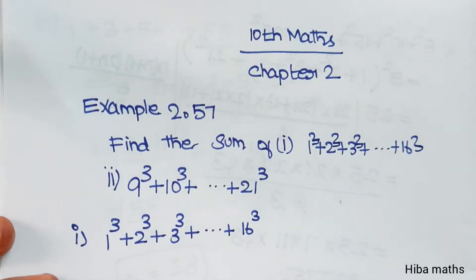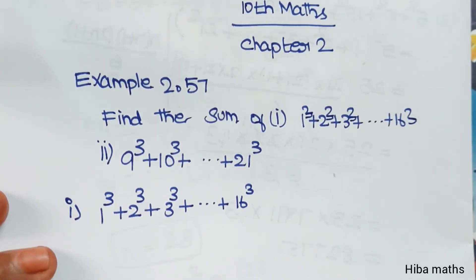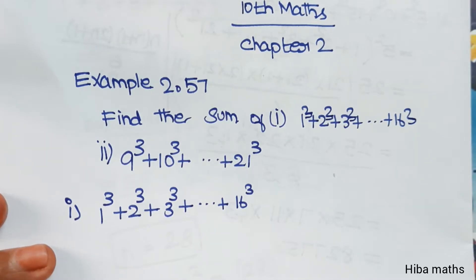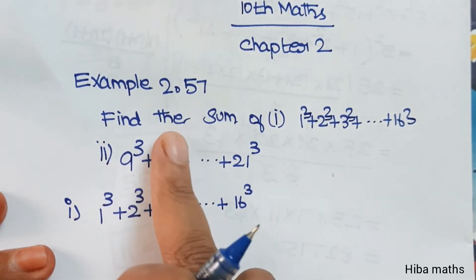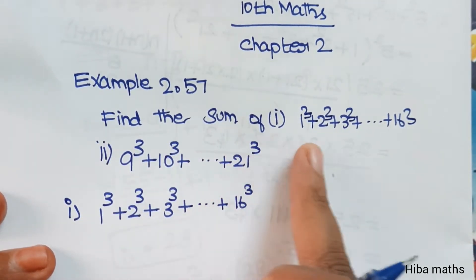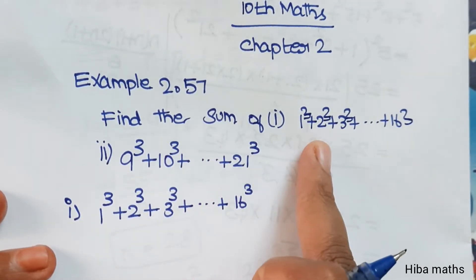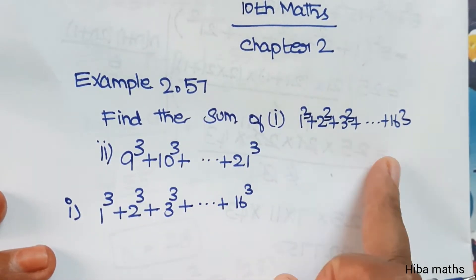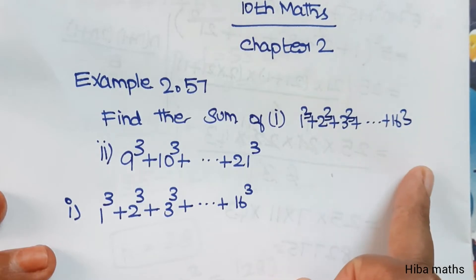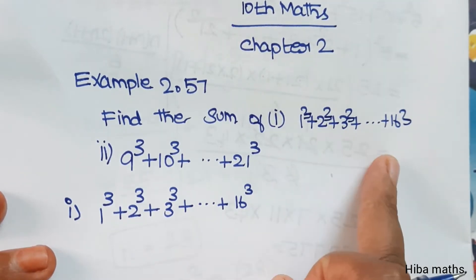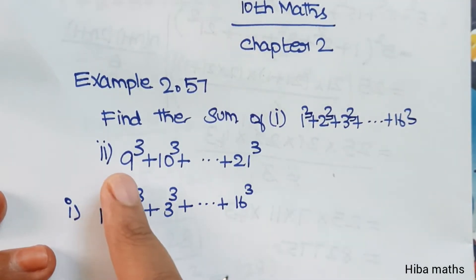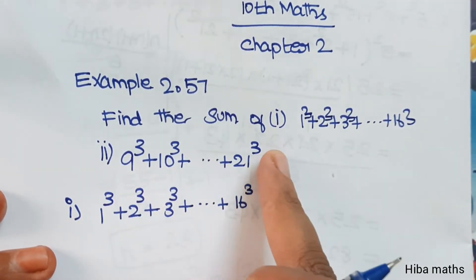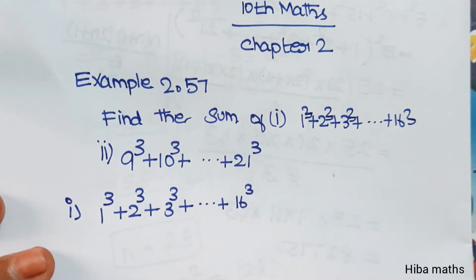Hello Students! Welcome to Hibamax 10 Standard Max Chapter 2 Example 2.57. Find the sum of 1 cube plus 2 cube plus 3 cube up to 16 cube. And 9 cube plus 10 cube up to 21 cube.